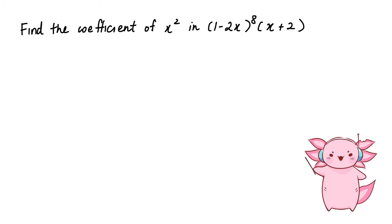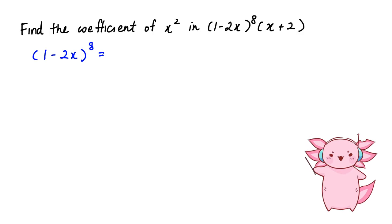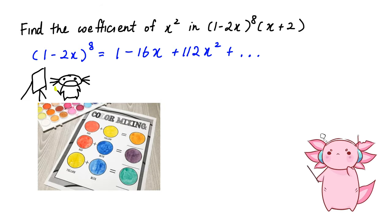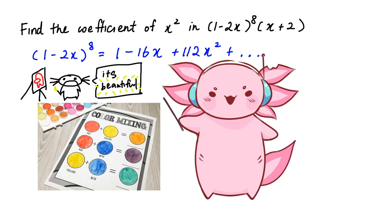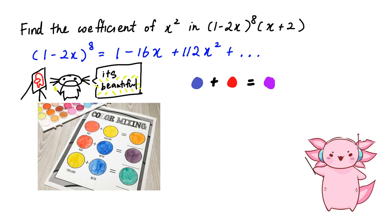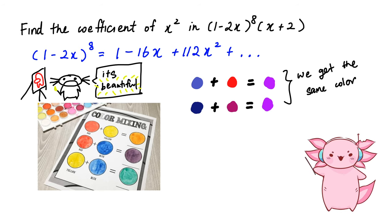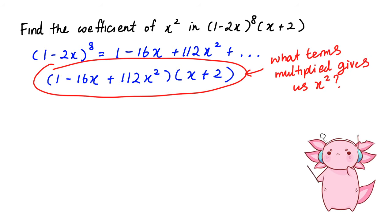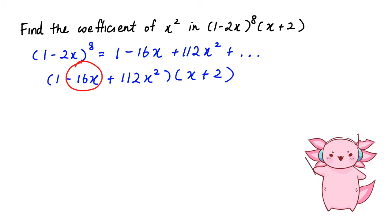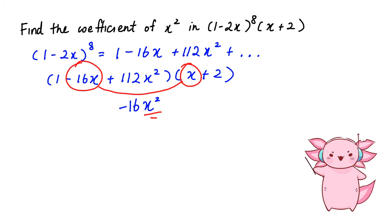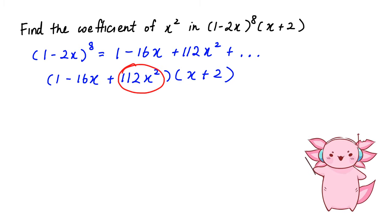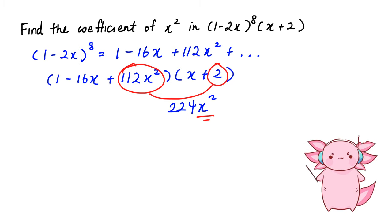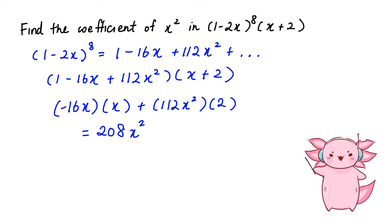If the question asks you to find the coefficient of x-squared in the expansion, we only need to expand (1 − 2x)⁸ up to the x-squared term, then do some mixing. Think of it like mixing colors: different combinations can both give the same result. We look at which terms multiplied together give x-squared. The first is −16x multiplied by x, and the second is 112x-squared multiplied by 2. We add those two coefficients to get the final answer of 208.